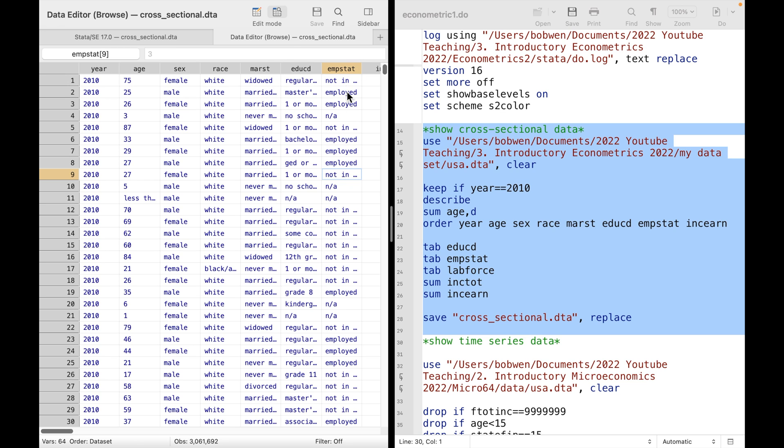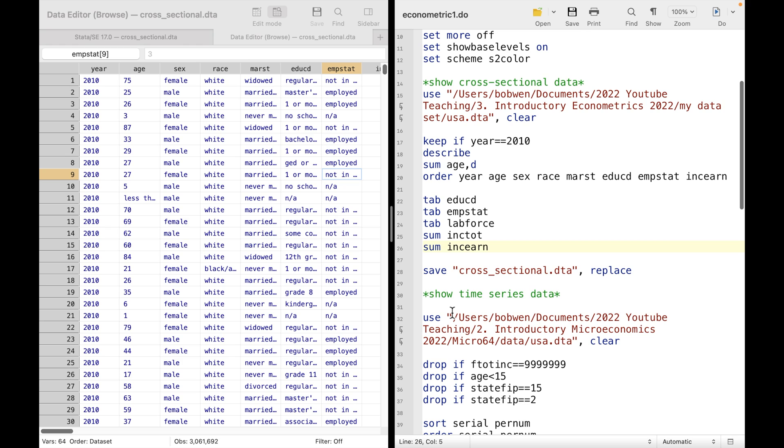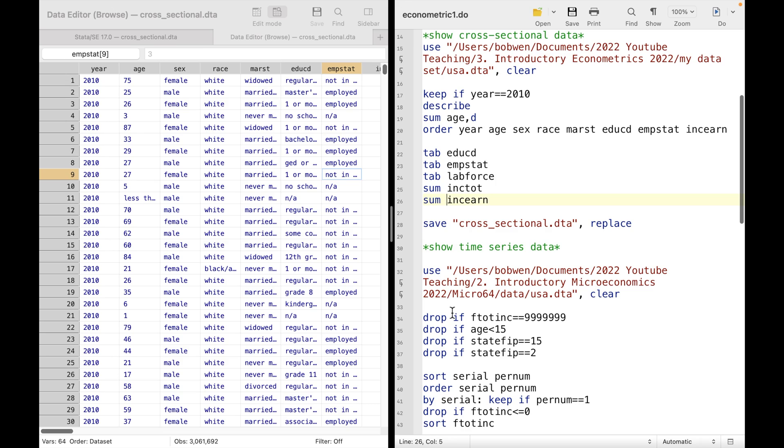marital status, educational attainment, employment status, annual labor income, and other information are also collected. In this cross-sectional data set, we have 3,061,692 observations for a single time period. By the way, I use Stata as my data analysis tool. Please refer to my introductory Stata 2022 course for details on using the software.